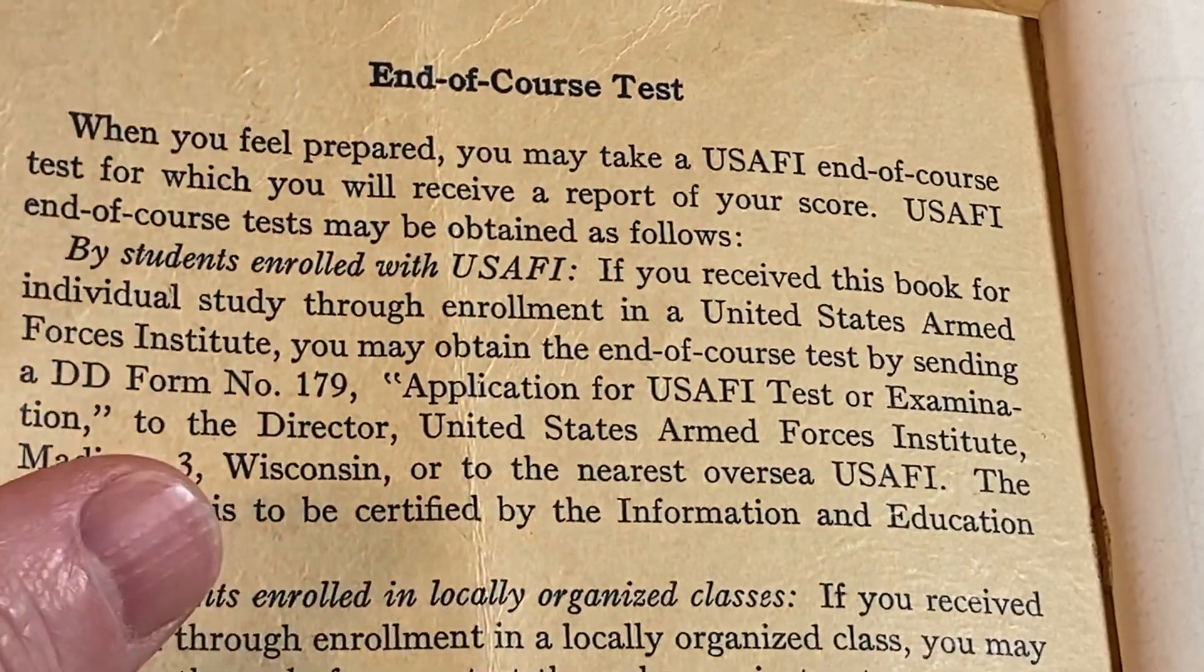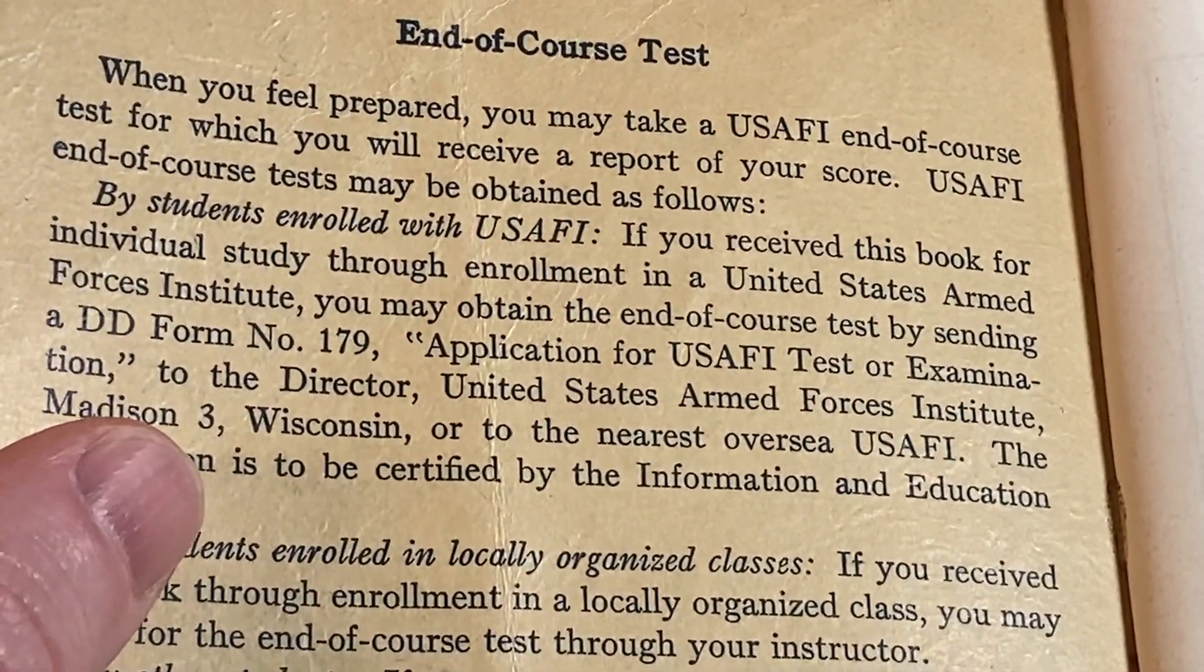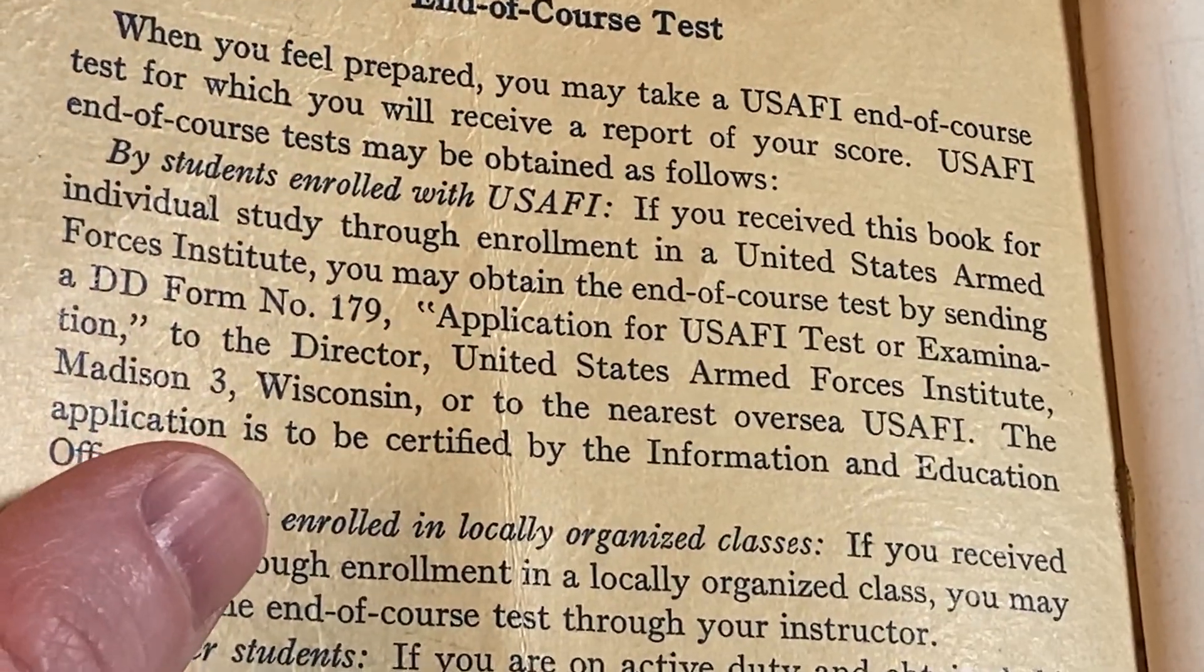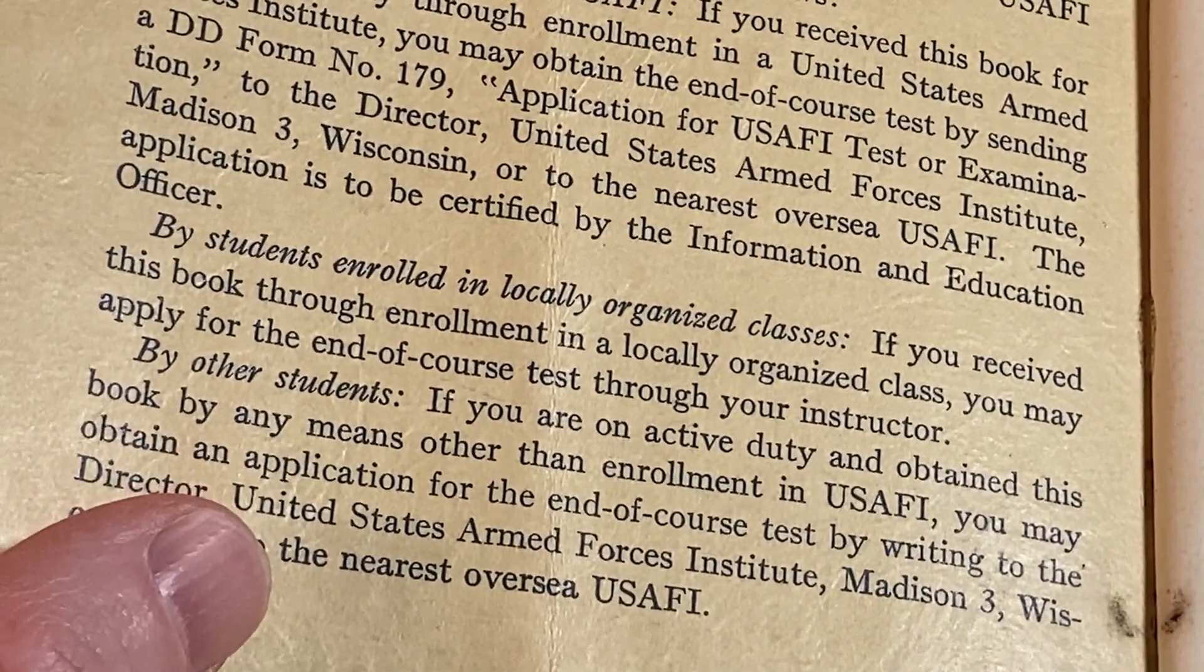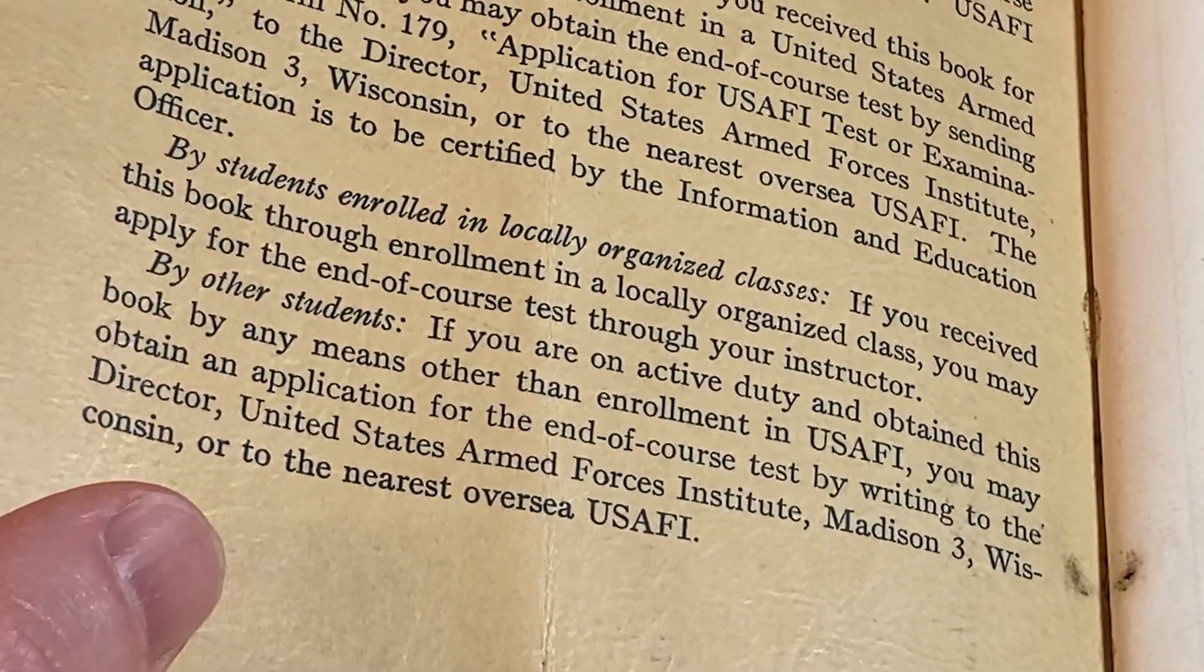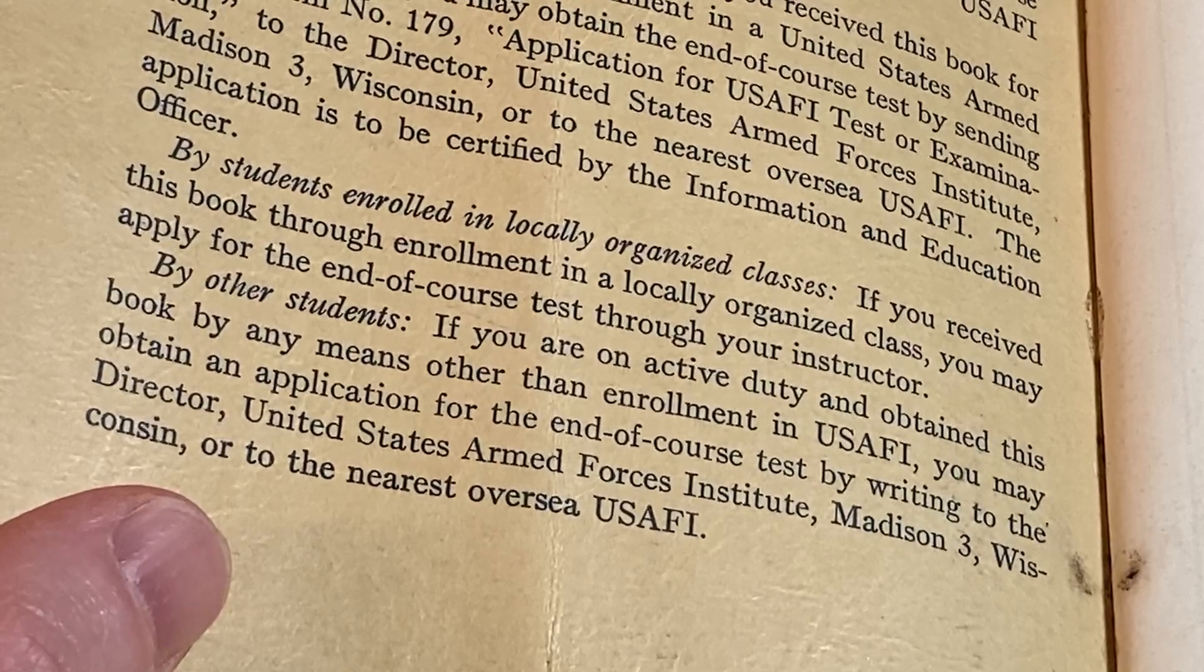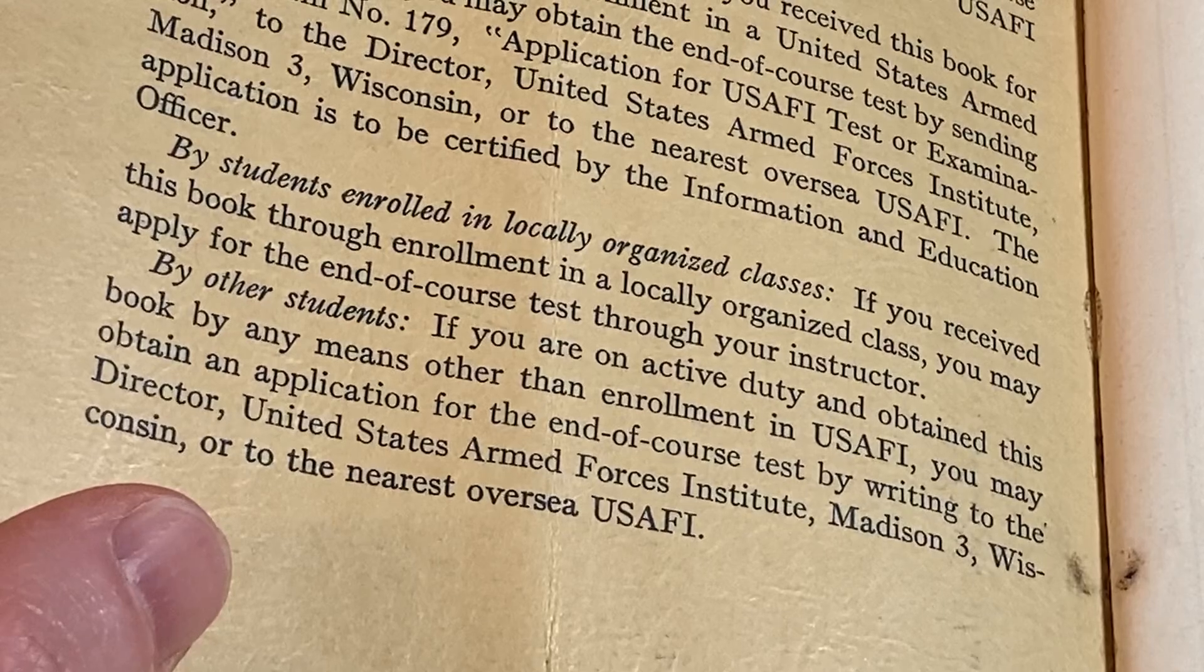If you receive this book for individual study through enrollment, you may obtain an end of course test by sending a DD form number 179. Wow, sounds really official. In locally organized classes, you may apply through your instructor. If you are on active duty and obtain this book by any other means, you may obtain an application by writing to the director, the United States Armed Forces Institute in Madison 3, Wisconsin or to the nearest overseas USAFI.